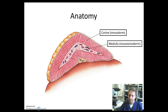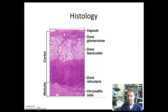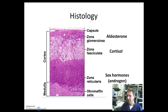The adrenal gland has a cortex that comes from the mesoderm and the medulla from the neuroectoderm. Histologic sections of the adrenal gland will show that the cortex is composed of the zona glomerulosa, zona fasciculata, and zona reticularis, and the medulla is composed of chromaffin cells. The zona glomerulosa secretes aldosterone, fasciculata cortisol, and reticularis mainly the sex hormone androgen, and chromaffin cells epinephrine and norepinephrine.